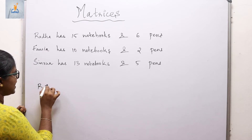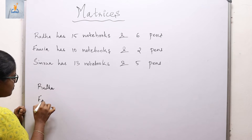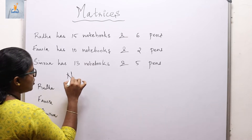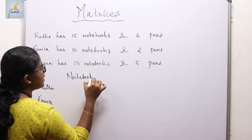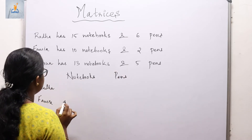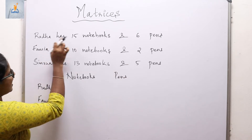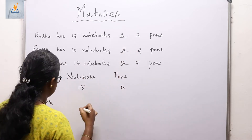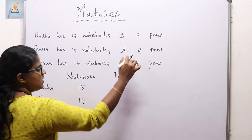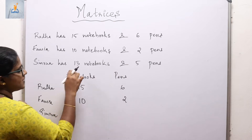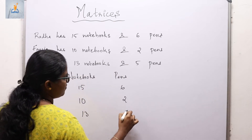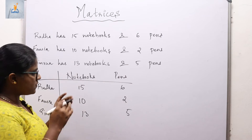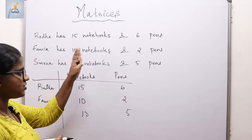I'm going to assign the names of the persons — Rada, Fauzia, and Simran — and put the number of notebooks and pens. Rada has 15 notebooks and 6 pens. Fauzia has 10 notebooks and 2 pens, while Simran has 13 notebooks and 5 pens. This is a tabular representation of this particular situation. Let me give another tabular representation of the same situation.